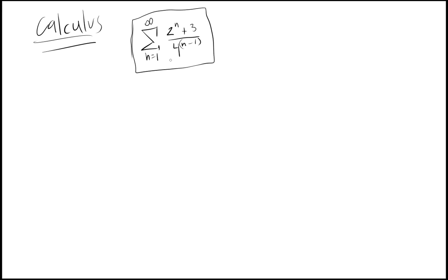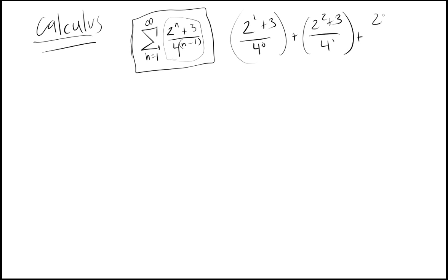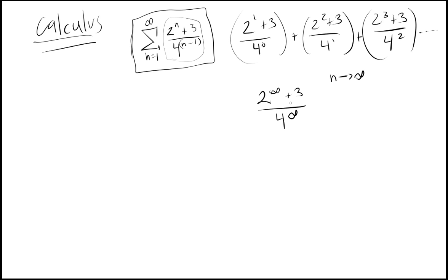It's 2 to the 1 plus 3 over 4 to the 0, plus 2 to the 2 plus 3 over 4 to the 1, plus 2 to the 3 plus 3 over 4 to the 2, and so on until n gets to infinity. So eventually you get 2 to the infinity plus 3 over 4 to the infinity. But you can actually figure out what this sum is — not only the infinite term, but what the sum of an infinite amount of numbers is.